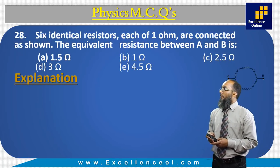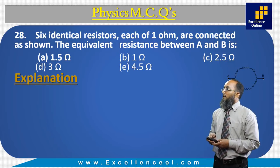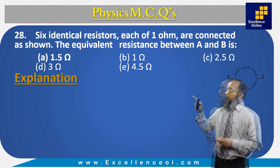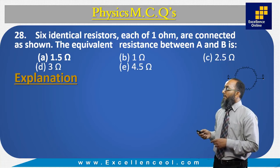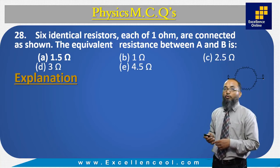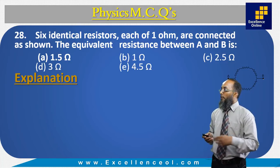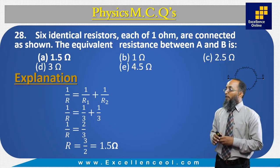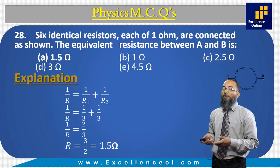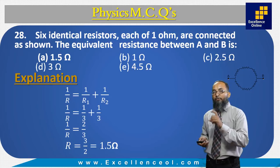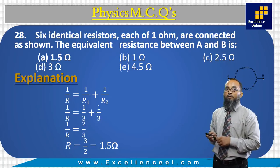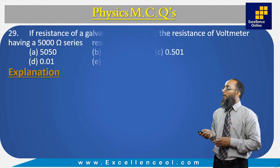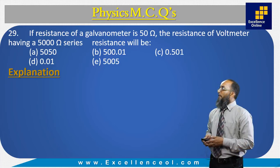Six identical resistors, each 1 ohm, are connected as shown. The resistances in the upper branch total 3 ohms and the lower branch also totals 3 ohms. These two 3-ohm resistances are in parallel, so 1/R = 1/3 + 1/3 = 2/3, giving R = 3/2 = 1.5 ohms. The correct answer is 1.5 ohm.